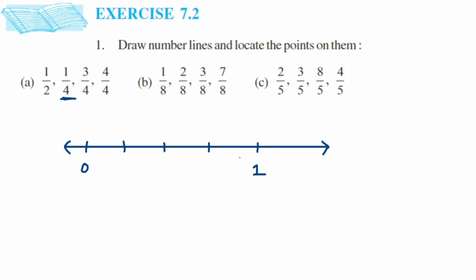Now let's start plotting. After 0, since I have made 4 equal parts, the first one will be 1 upon 4, second will be 2 upon 4, third will be 3 upon 4, and the next — which is 1 — will actually be 4 upon 4. We know that 4 upon 4 is nothing but 1; you can write either 4/4 or 1, both are the same.